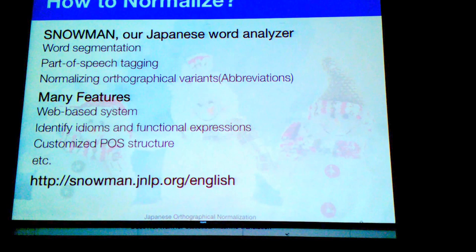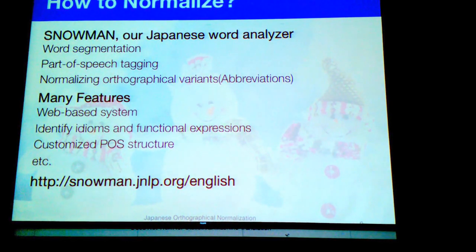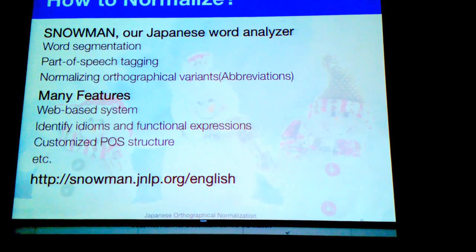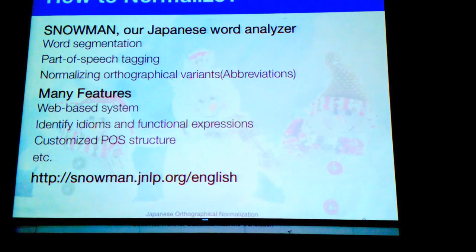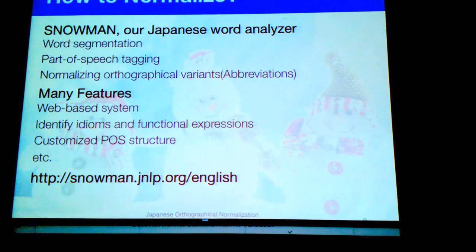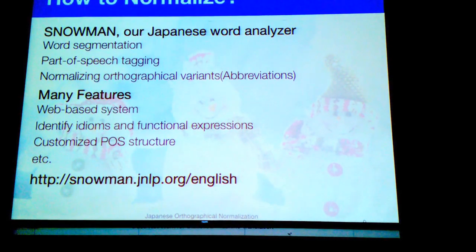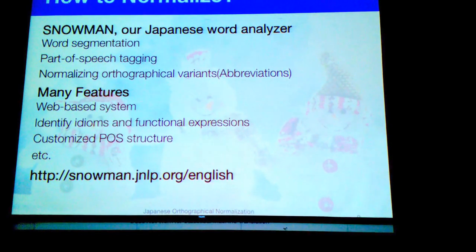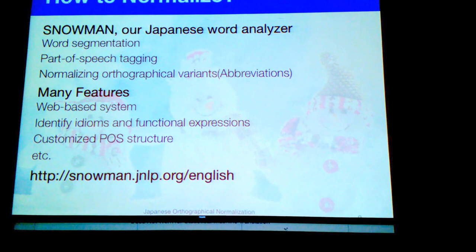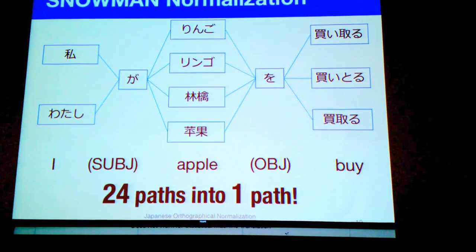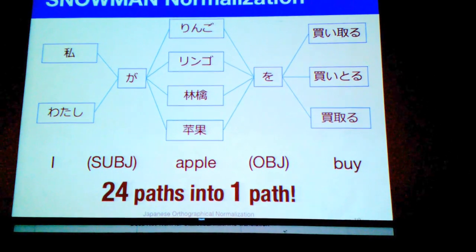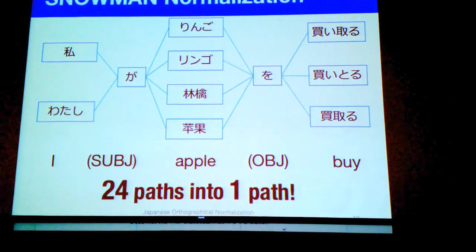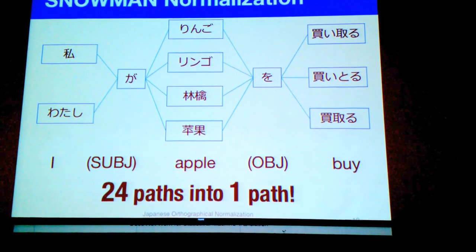So how do we normalize it? For normalization, we developed Snowman, our word analyzer, which provides word segmentation and part-of-speech tagging, and also normalizes orthographical variants. There are many features, so if you are interested in our analyzer, please visit the URL: http://snowman.jnlp.org/english. Using Snowman for normalization, we can reduce 24 paths into one path. This is normalization.